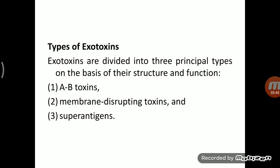Superantigen produces toxic shock syndrome. The mechanism is that the superantigen bridges the MHC class II molecule on the antigen-presenting cell with the T cell receptor on the surface of the T cell. Once this bridge forms, T cells are activated, leading to massive secretion of pro-inflammatory cytokines, and this cytokine production produces toxic shock syndrome.